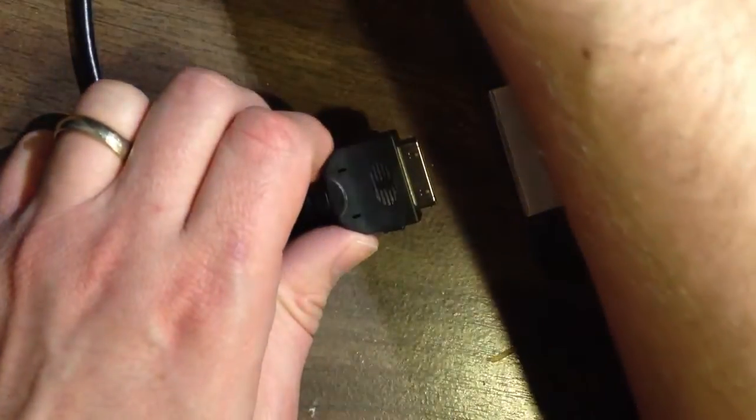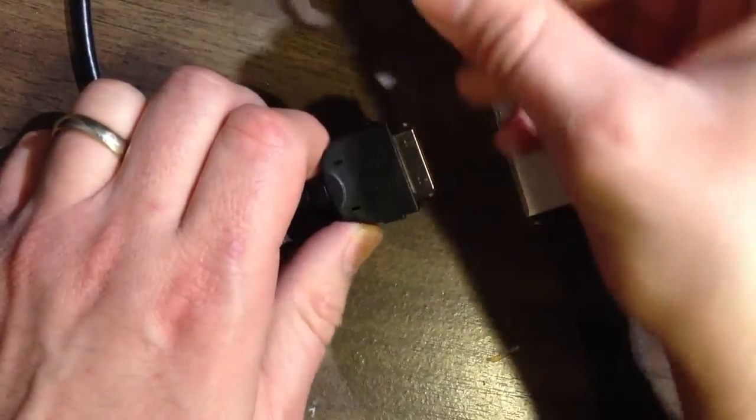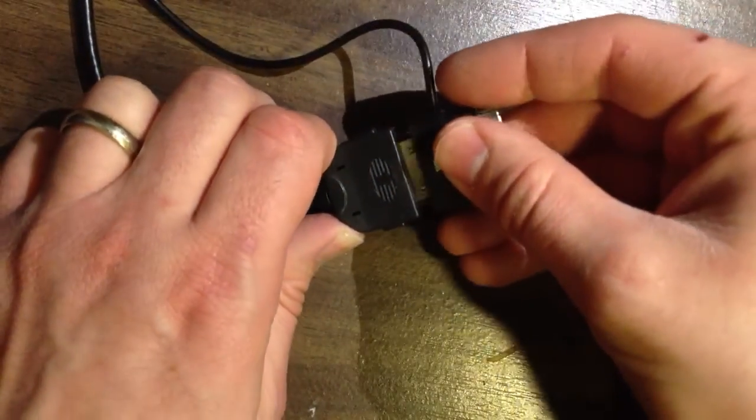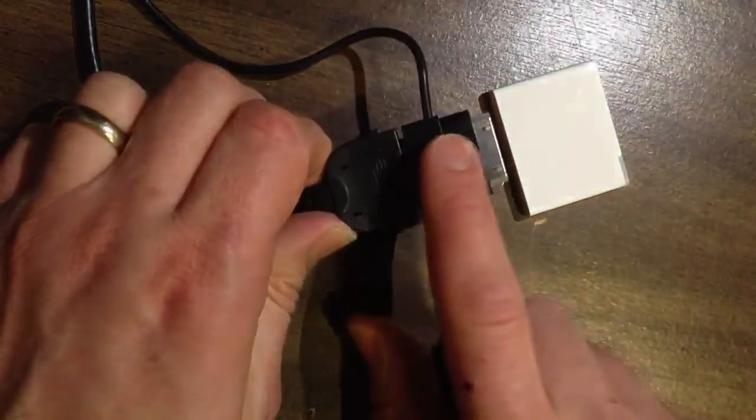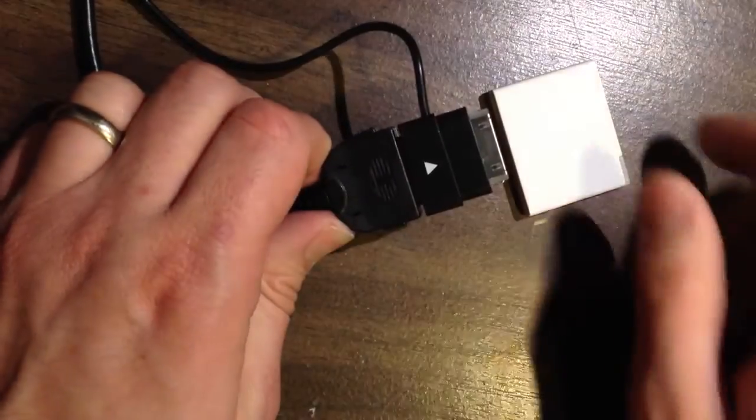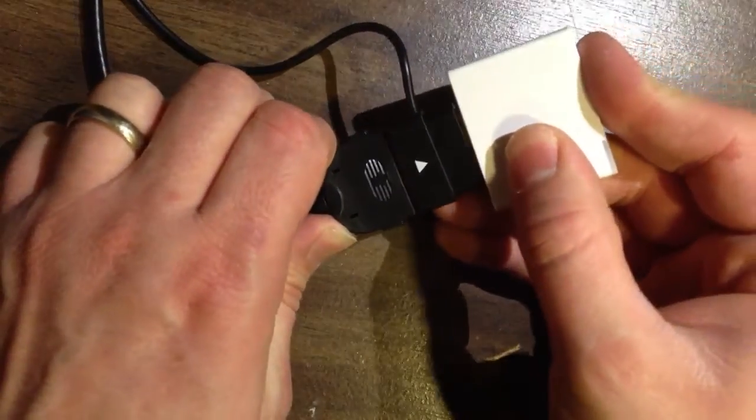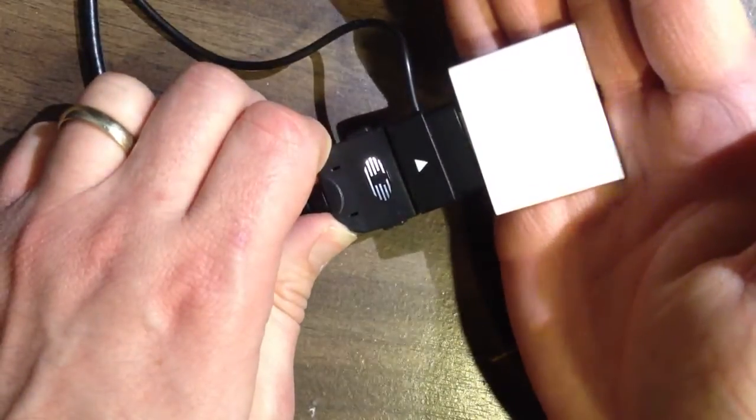So I'm going to disconnect this and bring in my prototype. What I'm going to do is plug this into the end of the custom AMI aux cable and then connect the receiver to the other end. And you see now we have power.